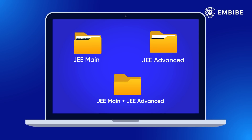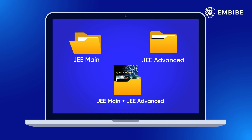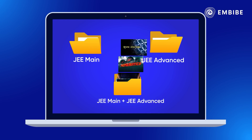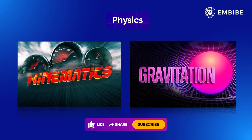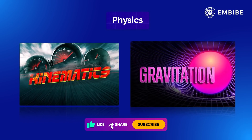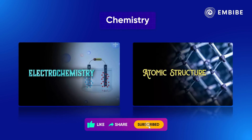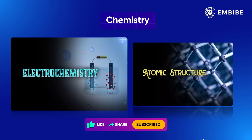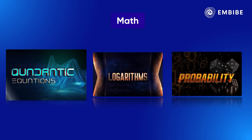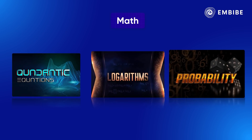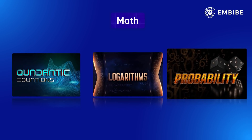Finally, let's look at some examples of topics that are in both JEE Main and JEE Advanced. In physics, there's kinematics and gravitation. Under chemistry, we have electrochemistry and atomic structure. And in math, there's quadratic equations, logarithms, probability, etc.